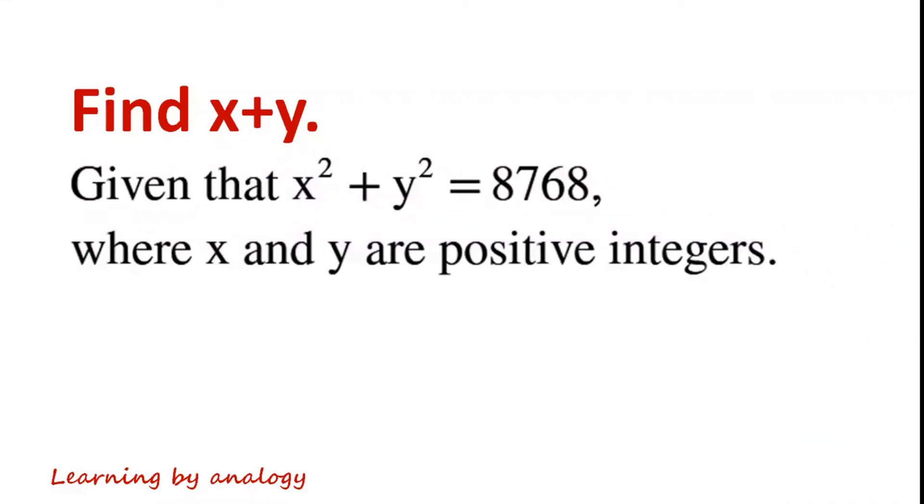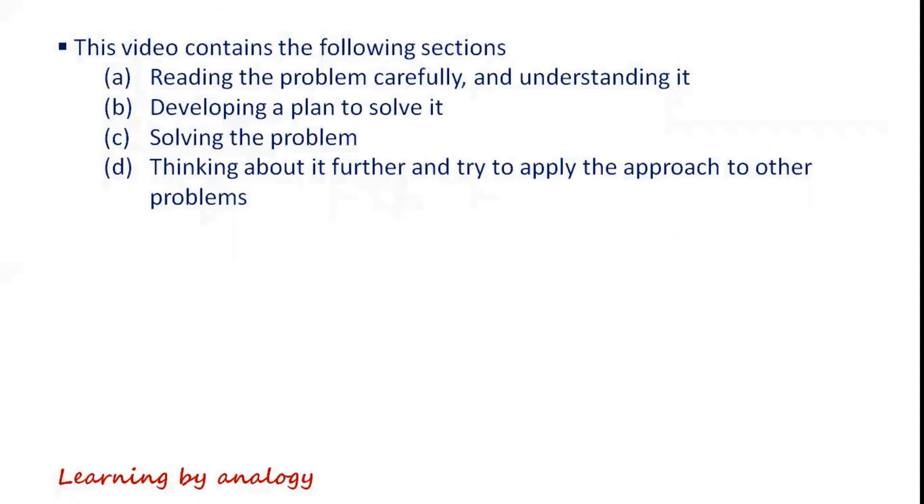Given that x squared plus y squared equals 8768, where x and y are positive integers, find x plus y. This video contains the following sections: